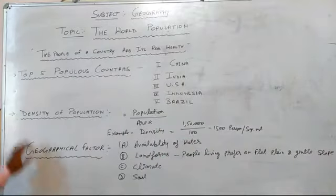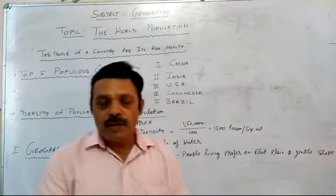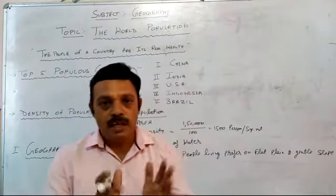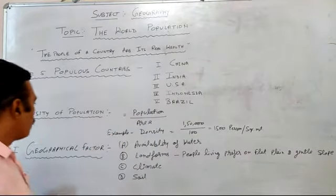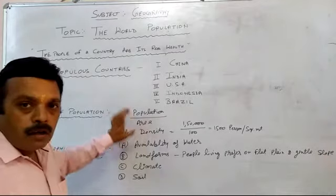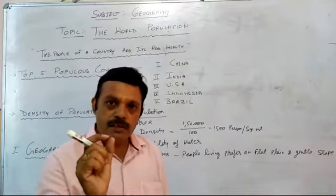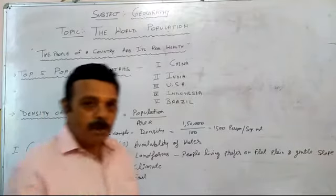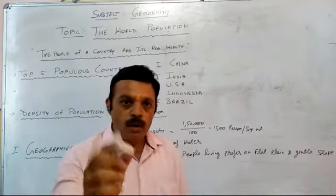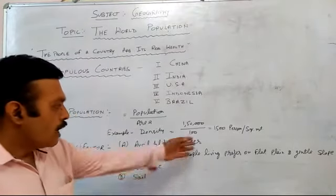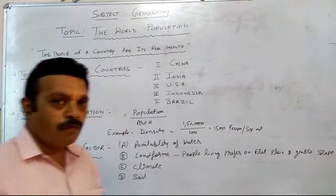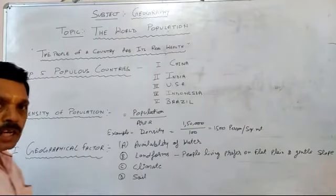Now we discuss about the density of population. What is the factor of density of population? How can we calculate the population density of an area or country? The formula is: population divided by area. This is the simple formula to calculate the density of population. For example, 115,000 divided by 100 equals 1,500 persons per square kilometer. This is a very simple formula to calculate the density of population in any area.